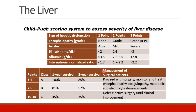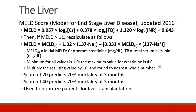This slide refers to the Child-Pugh scoring system to assess severity of liver disease, and a quick reference to the MELD score, which is used to classify patients' urgency and need for liver transplantation.